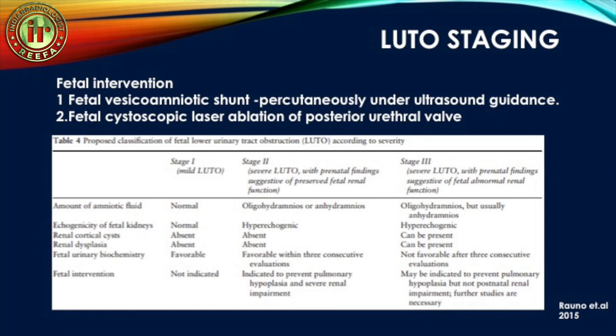To determine which fetuses should undergo intervention, a classification of LUTO according to severity was proposed, dividing LUTO into three stages. The criteria used for staging are amniotic fluid volume, renal echogenicity, renal cortical cysts, renal dysplasia, and fetal urinary biochemistry. Renal echogenicity and cortical cysts or dysplasia indicate renal damage. In stage one, everything is normal and fetal urinary biochemistry is favorable, so interventions are not indicated.